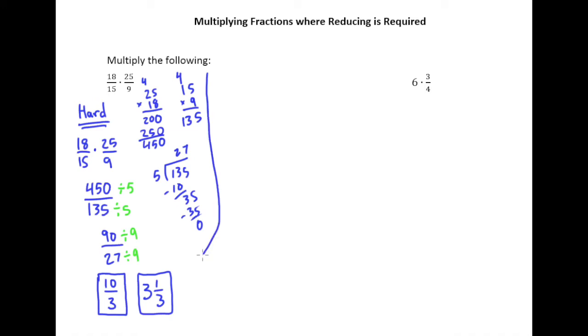There's a much easier way to go about this. So let's talk about that. So we rewrite the problem here. We have 18 15ths times 25 ninths.